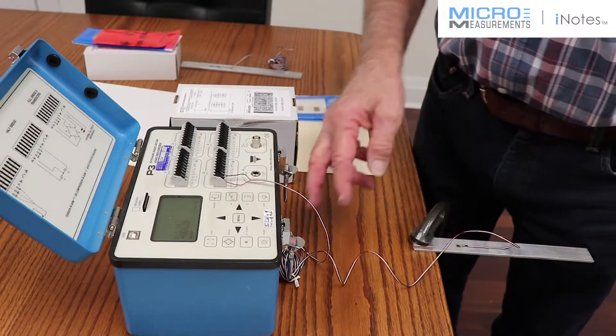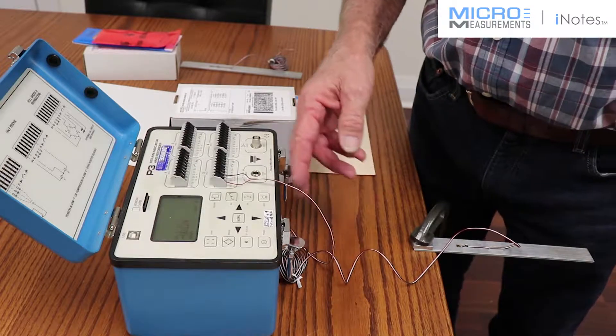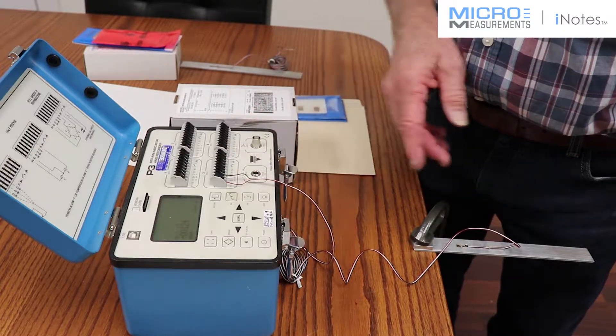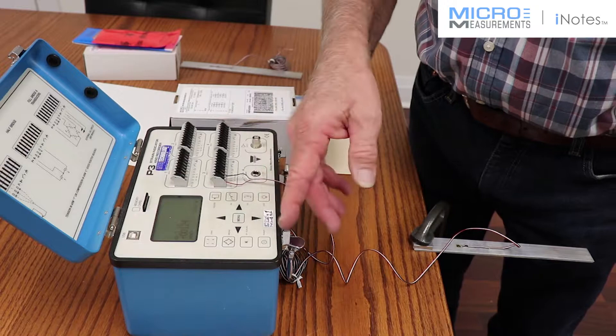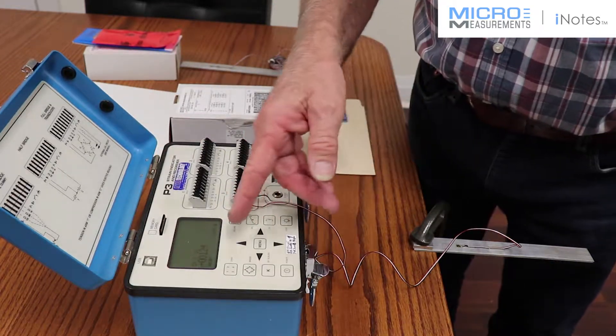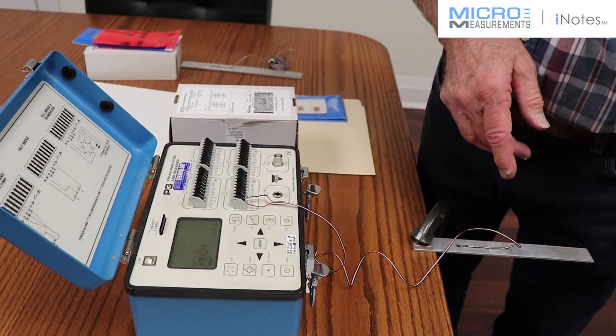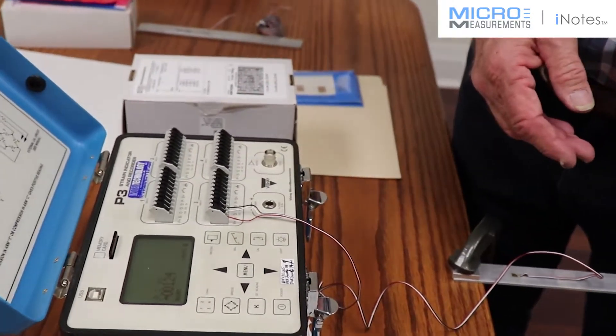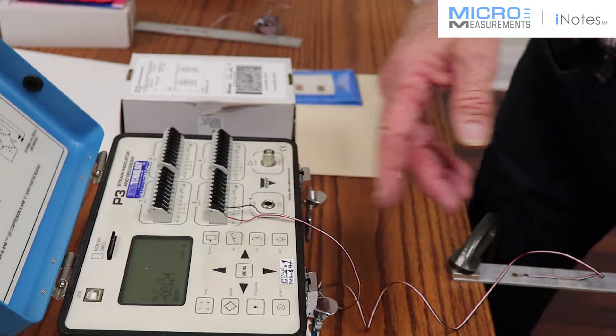The strain gauge is connected to channel number three, and we've switched it on. We have a reading of minus 124 micro strain, showing it hasn't been balanced yet.